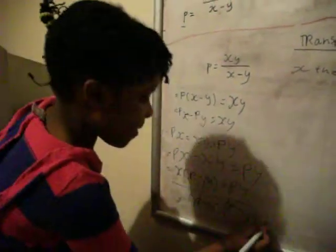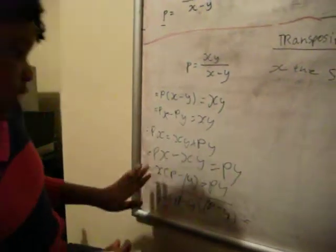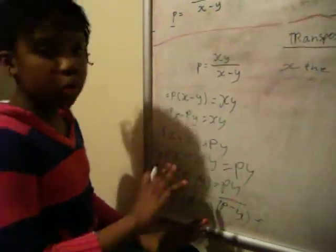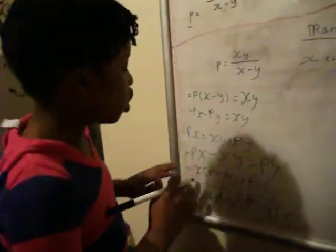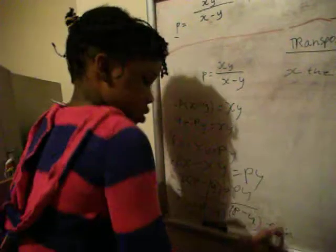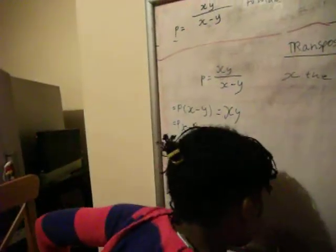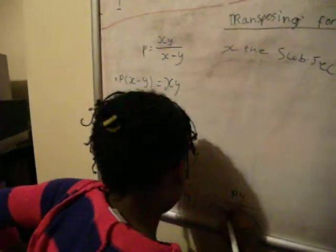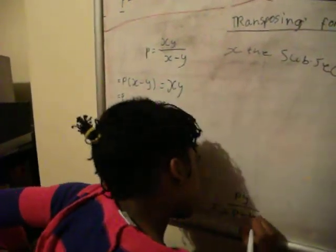And then that just gives you x equals py over p minus y. All you simply do is just switch it around straight away. I've got x equals py over p minus y.